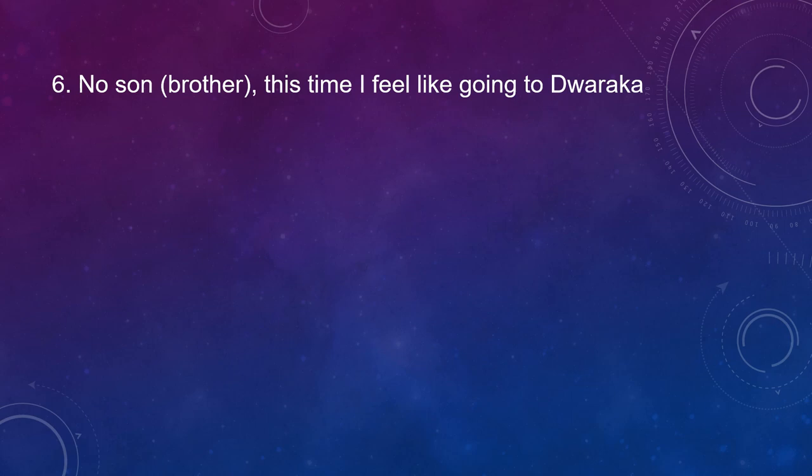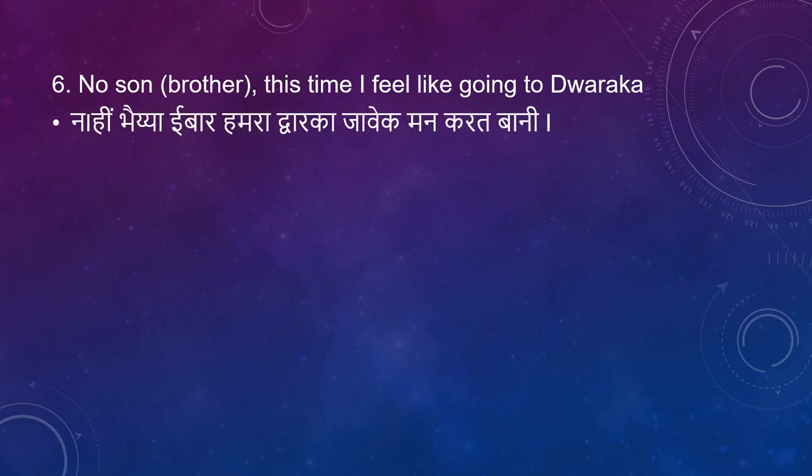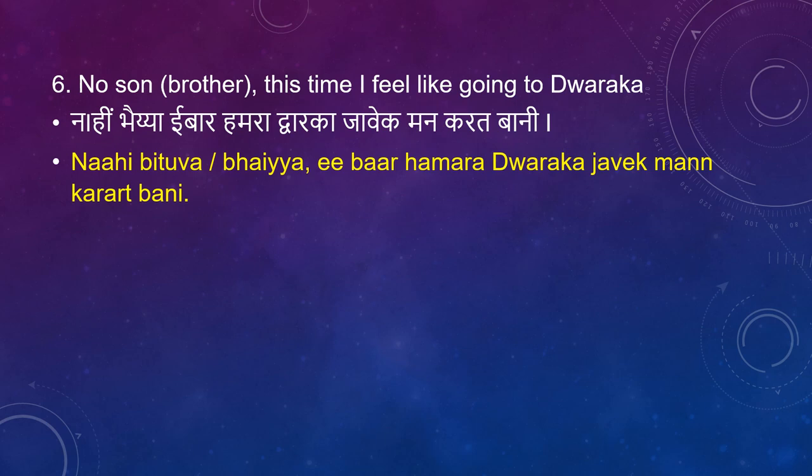The old man answers: 'No son' or 'No brother — this time I feel like going to Dwarka.' In Bhojpuri: 'Nahi bhaiya, E bar hamra Dwarka javeka man karatwani.' Breaking it down — 'Nahi' means no, 'bhaiya' is brother, 'bitua' is son, 'E bar' means this time, 'hamra' means mine, and 'Dwarka javeka man karatwani' means 'I have a desire to go to Dwarka' or 'I feel like going to Dwarka.'